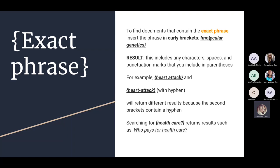Be careful: if you make a spelling mistake and place a misspelled word in curly brackets, Scopus will find no results, because curly brackets are treated as absolute truth. Scopus will search for the phrase exactly as typed, including the mistake. So always check grammar and spelling when using curly brackets.